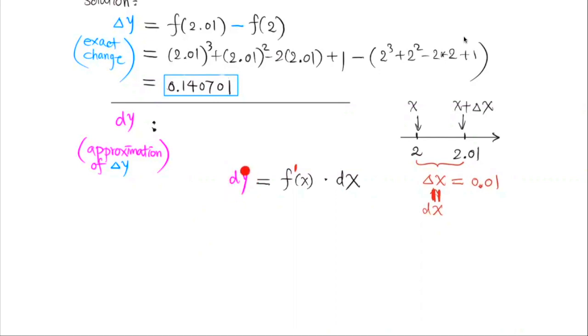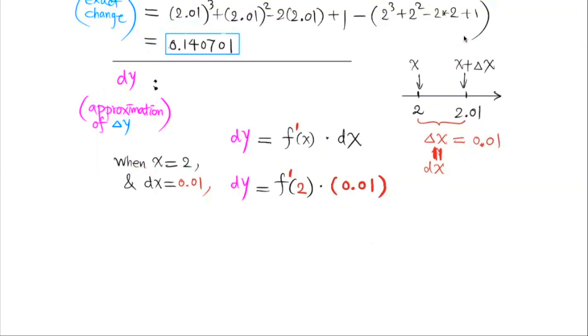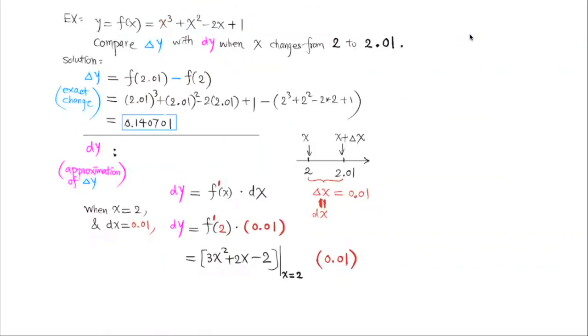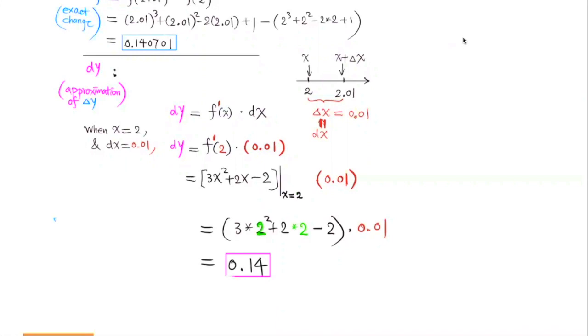Now let's compute the differential dy. Remember that the differential dy is f prime of x times the differential dx. The dx here is the same as delta x. It's the change of x. In this case, x changed from 2 to 2.01. So dx or delta x is equal to 0.01. When x is equal to 2 and dx is equal to 0.01, dy will be equal to f prime of 2 times 0.01. The derivative of this function here is 3x squared plus 2x minus 2. So we're going to substitute x equal to 2. Now do the calculation. We get the differential dy is equal to 0.14.